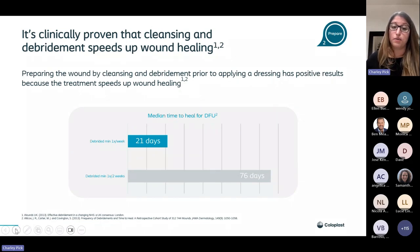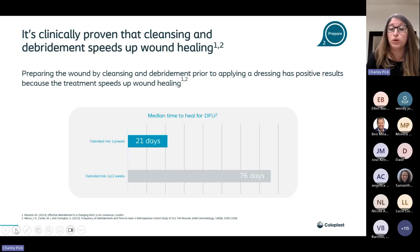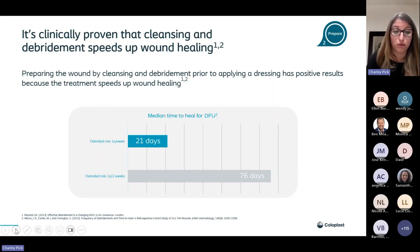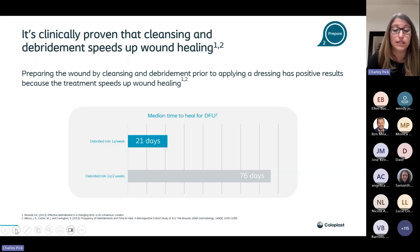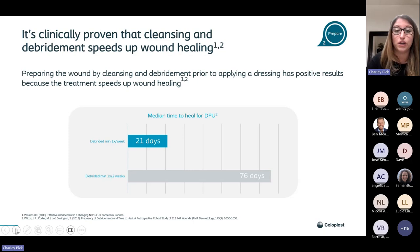A study by Wilcox looked at over 300,000 patients with regard to wound preparation — including nearly 60,000 diabetic patients. The study found how important it is to cleanse and debride wounds before applying a dressing, because it has massive positive results in speeding up wound healing. If you do debridement once every two weeks, the median time to heal for a diabetic foot ulcer was 76 days. If you increase debridement to once a week, the median time to healing was 21 days — three times less. If we can heal patients in 21 days instead of 76, that gives you time back and your patients will be much happier.